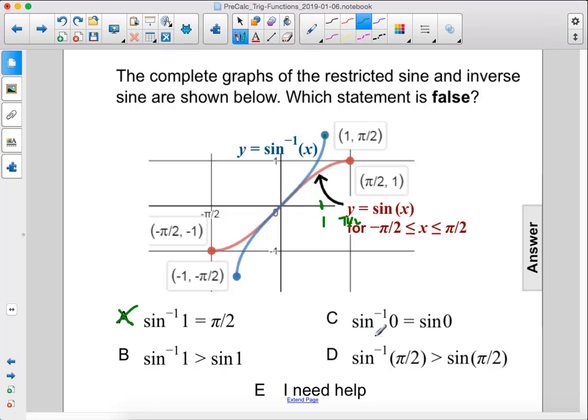Here we have arc sine of 0 equals sine of 0, and that is true. Right there is where the graphs intersect, so the arc sine of 0 is equal to sine of 0.